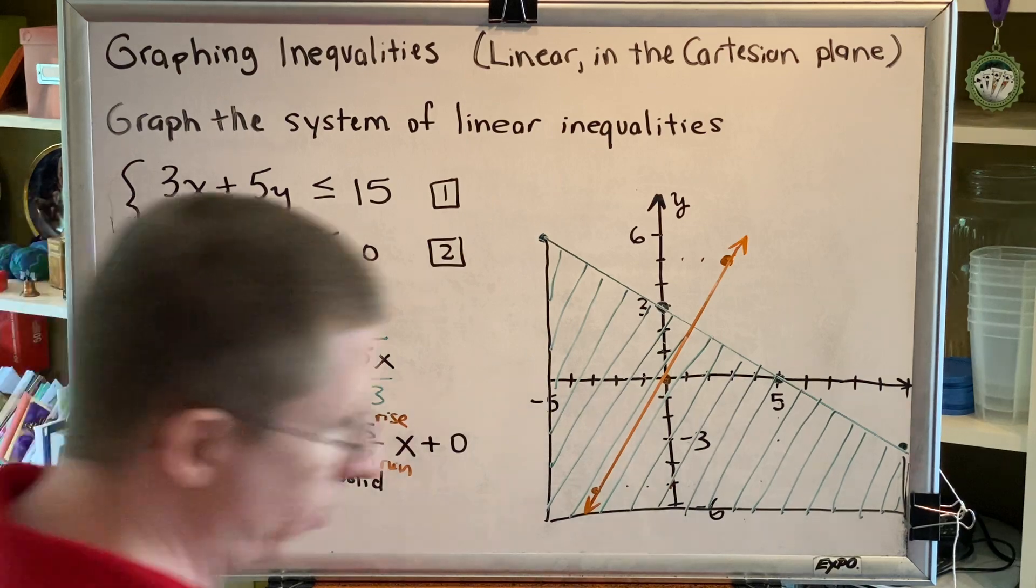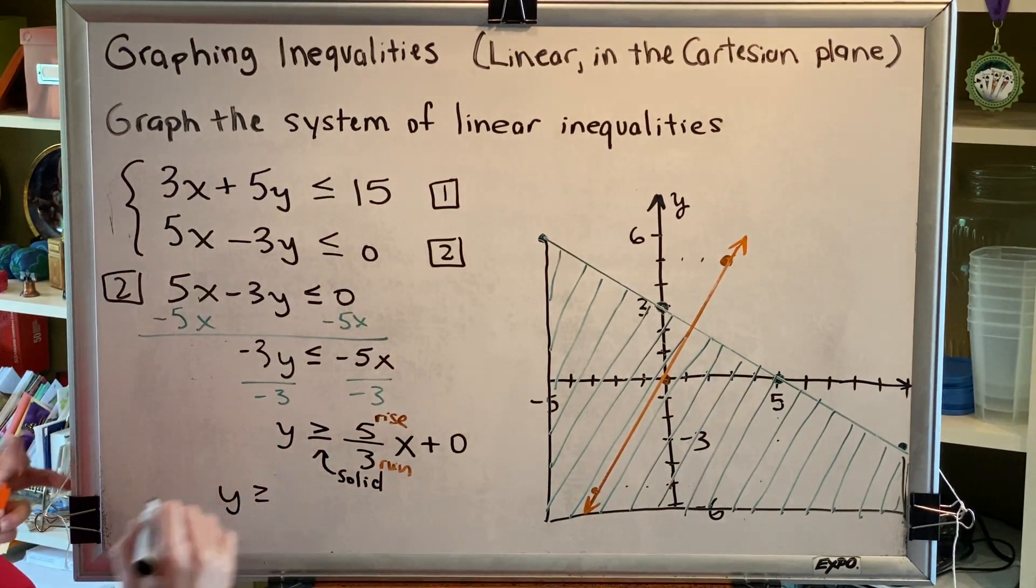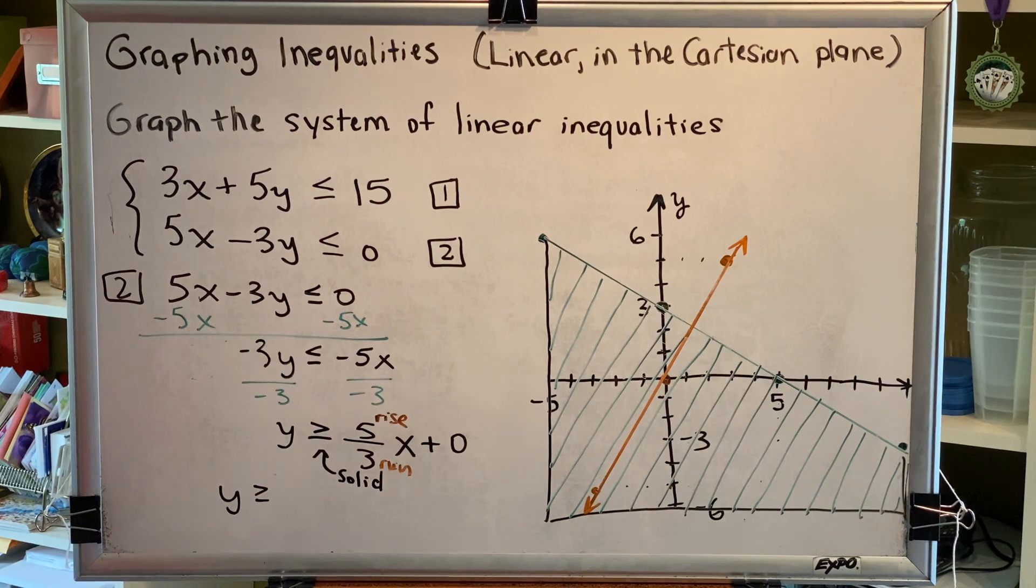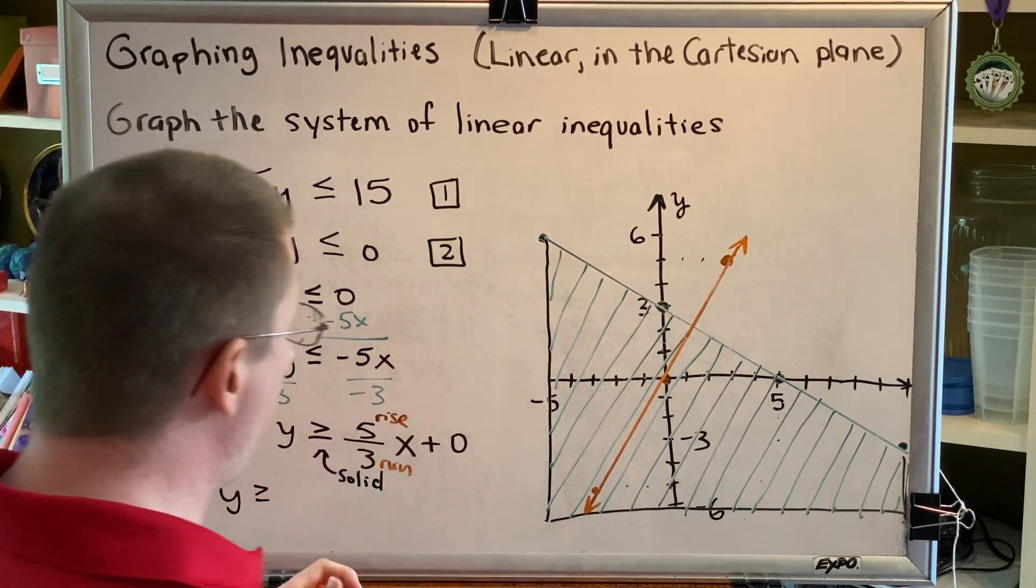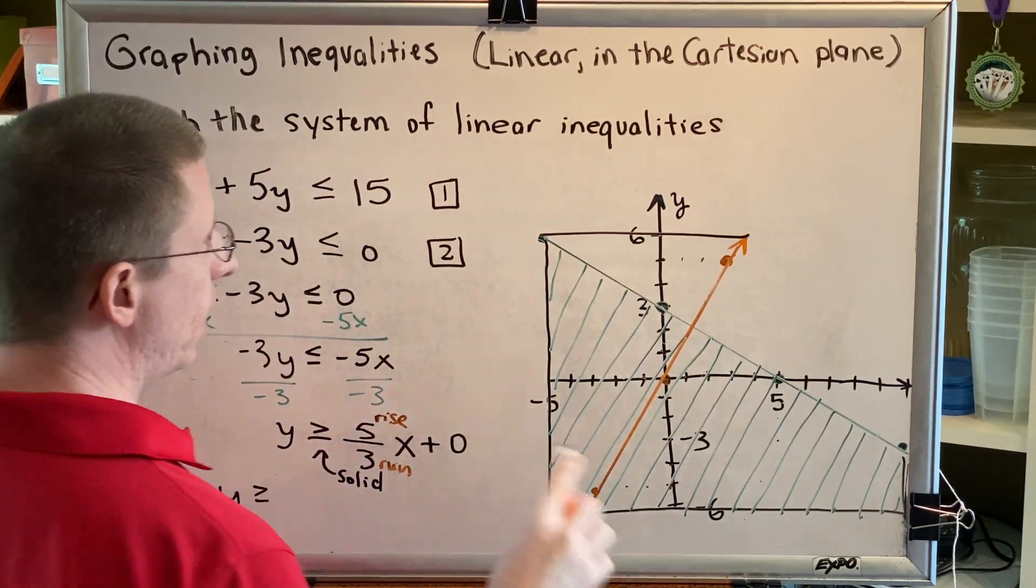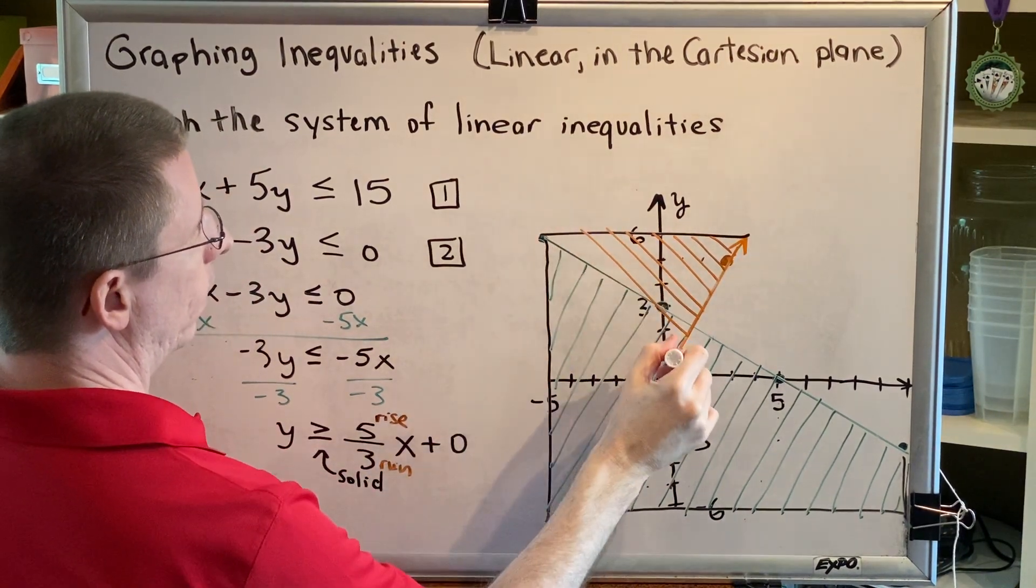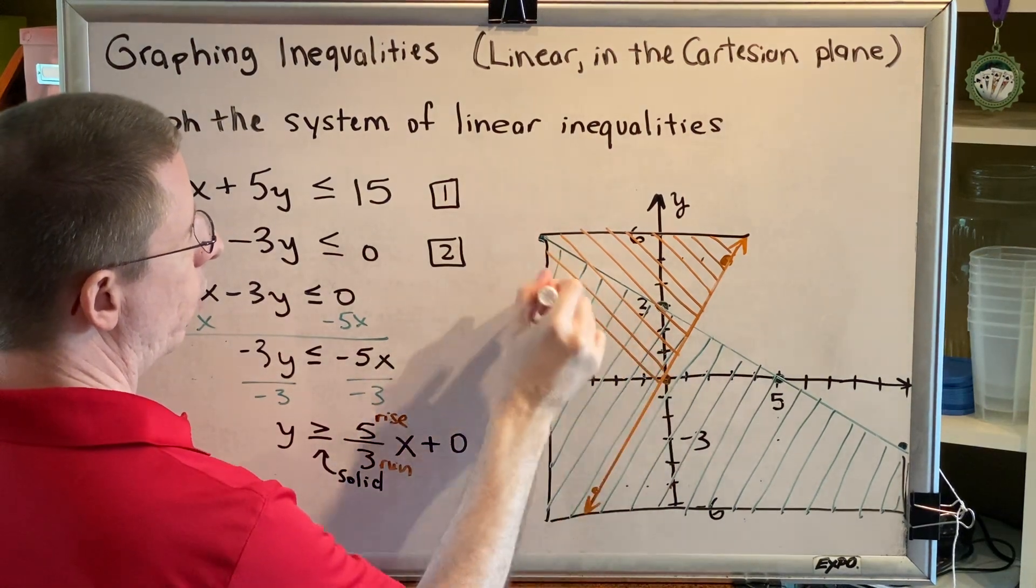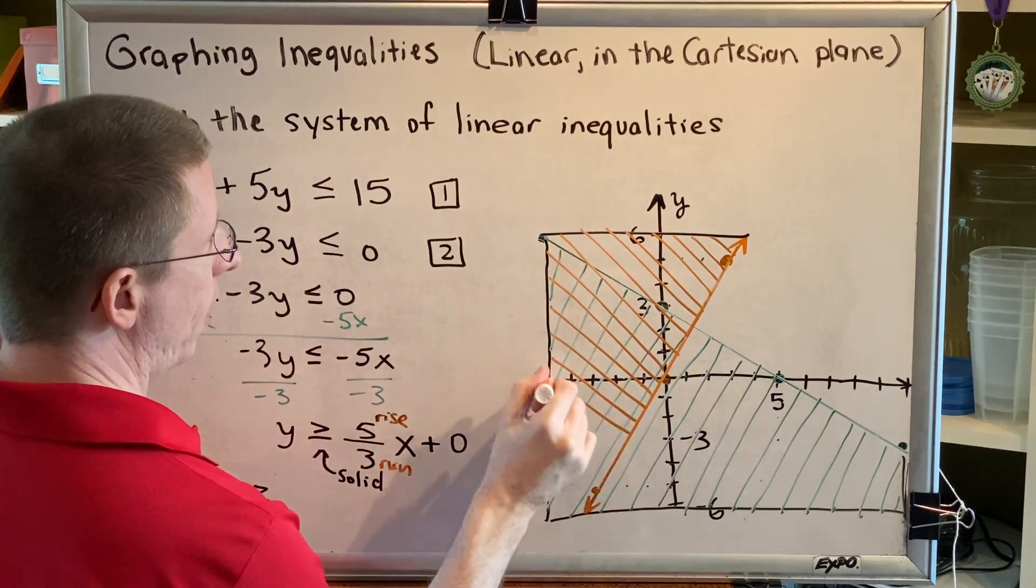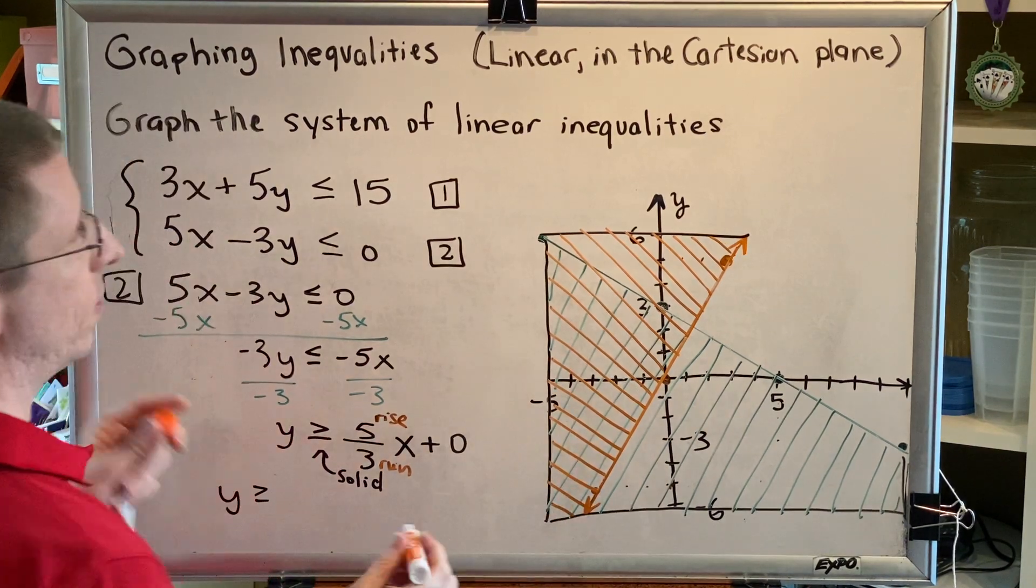That brings us to step 3, which is the shading step. At the end of step 1, our inequality said y is greater than or equal to. The variable is y, so our choices for shading are up or down. It says greater than, so we're going to shade up above the orange line. Notice that I'm paying absolutely no attention to the green line or the green shading when I'm doing this. I'm just shading up from the orange line out to the outermost edges of my grid.